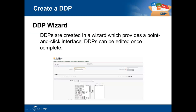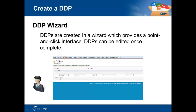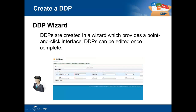Creating a DDP is simple. DrawLoop will provide you as an admin with a point and click interface called the DDP wizard. This wizard will request information for what will eventually become attributes of your DDP. Such attributes include security, methods for delivery, any relationships that may exist between your Salesforce objects, and your template files.